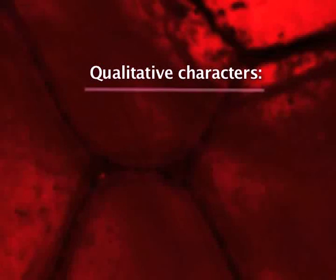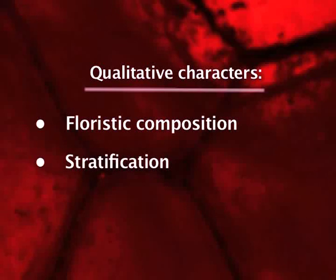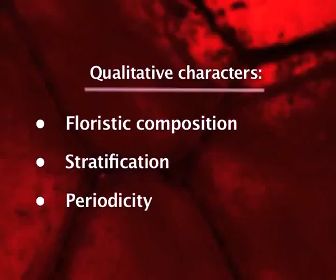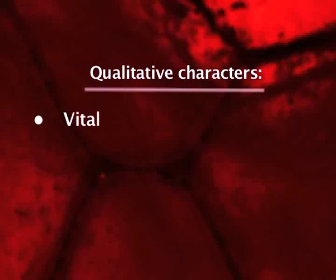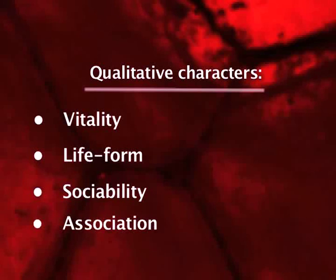Qualitative characters include: A. Floristic composition, that is, kinds of species in the community. B. Stratification of organisms or their parts above or below ground. C. Periodicity, that is, phenology. D. Vitality. E. Life forms, vegetation, habitat, and growth form. F. Sociability or gregariousness. G. Association of species.